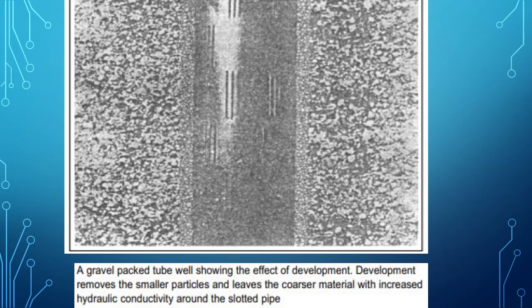Here in this figure, a gravel packed tube well is shown, illustrating the effect of development. Development removes the small particles and leaves the coarser material with increased hydraulic conductivity or porosity around the slotted pipe. At the center you can see the slotted pipe in a tube well, and around the slotted pipe there is uniform gravel material. The well development is carried out through the gravel pack. The purpose is to remove the finer material or bridging action present between the different gravel materials.